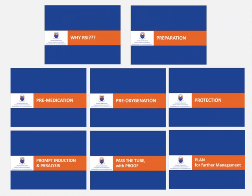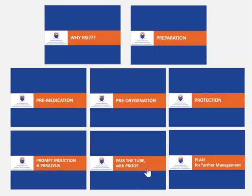So now let's look at those seven P's. The first P is preparation, the next is pre-medication, then pre-oxygenation, protection, prompt induction and paralysis, passing the tube with proof, and finally planning for further management.